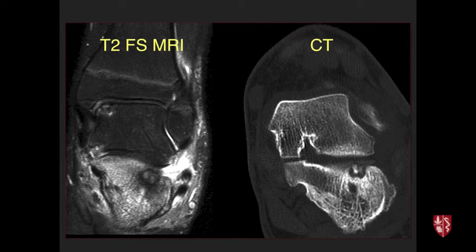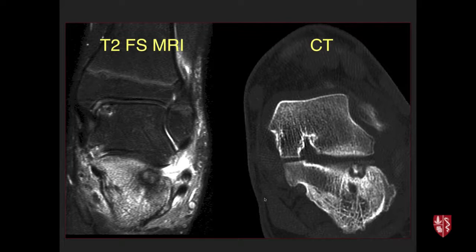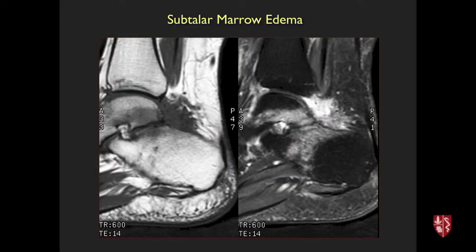The osteoid osteoma was initially misdiagnosed as a stress fracture. Once correctly identified and surgically removed, six months of pain resolved in the recovery room. Key distinguishing features: longer-standing pain, classic night pain relieved by aspirin or NSAIDs, patient not athletically active. Recognition of the nidus on CT is essential.